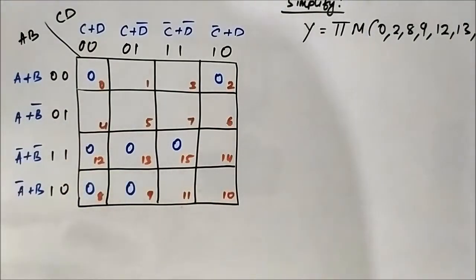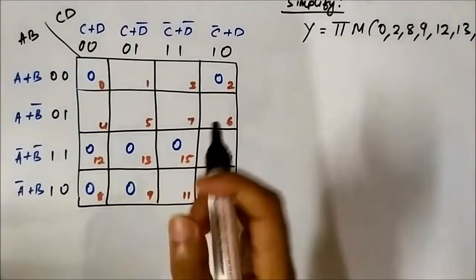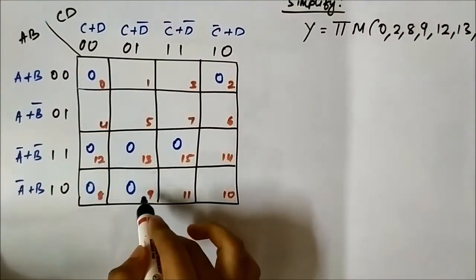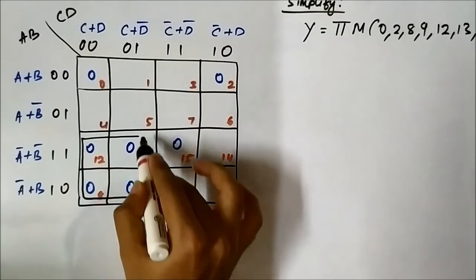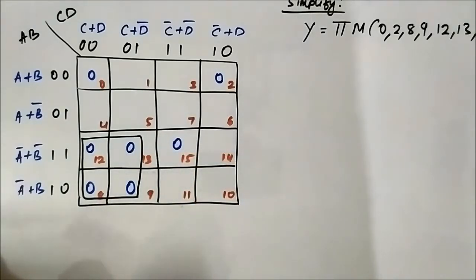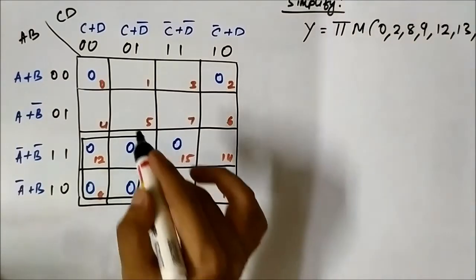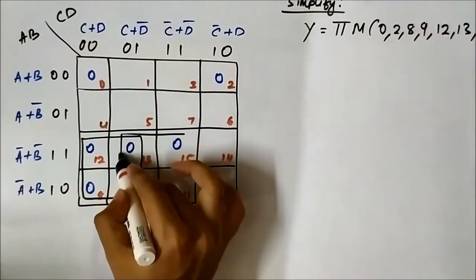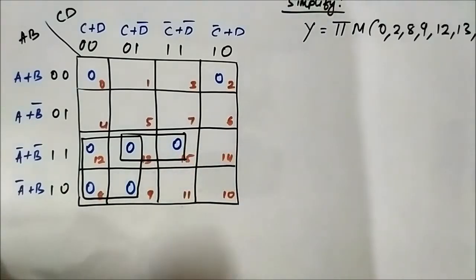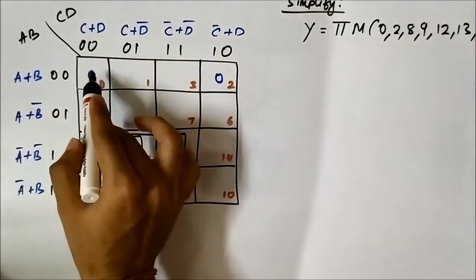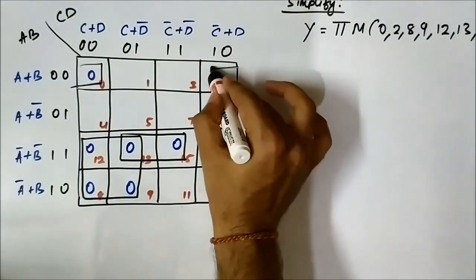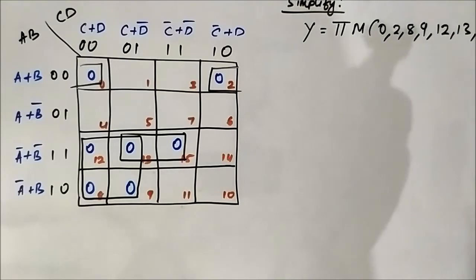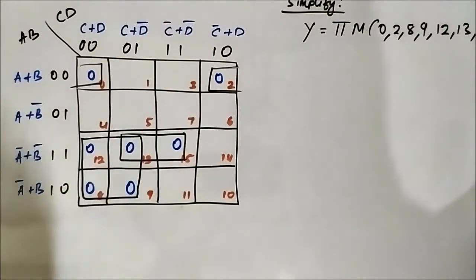Now we have to form groups. If you notice, cells 8, 9, 12, and 13 — we can form a quad here. Then cells 13 and 15 we can join to form a pair. Next, cells 0 and 2 we can form a pair. So all the cells have been grouped and now we have to find the common variables from these groups.